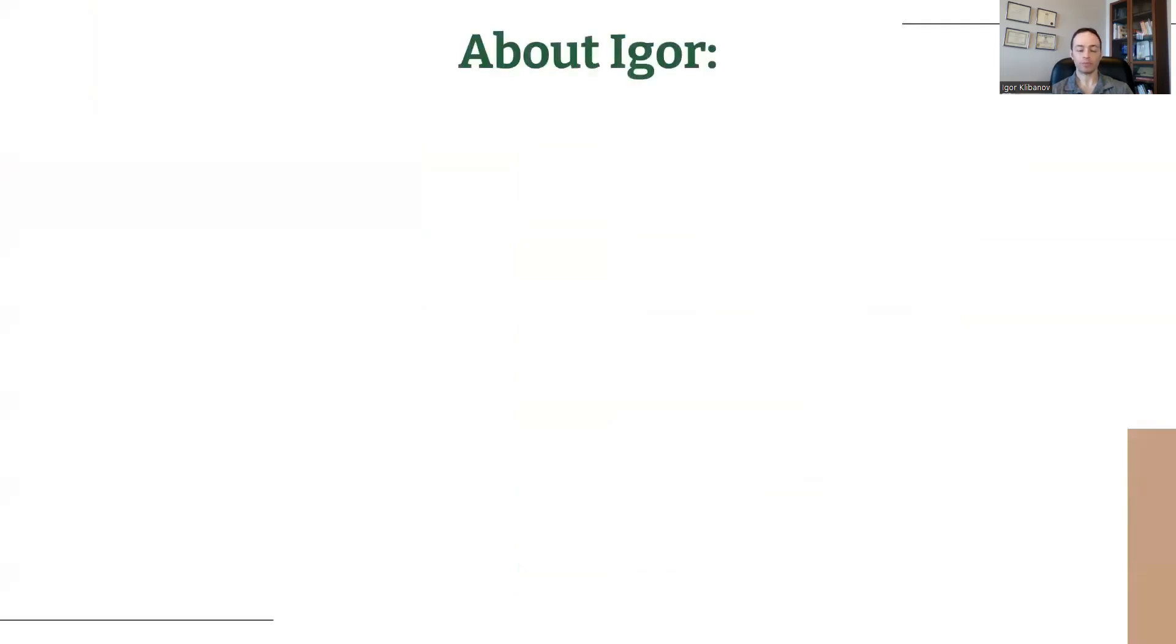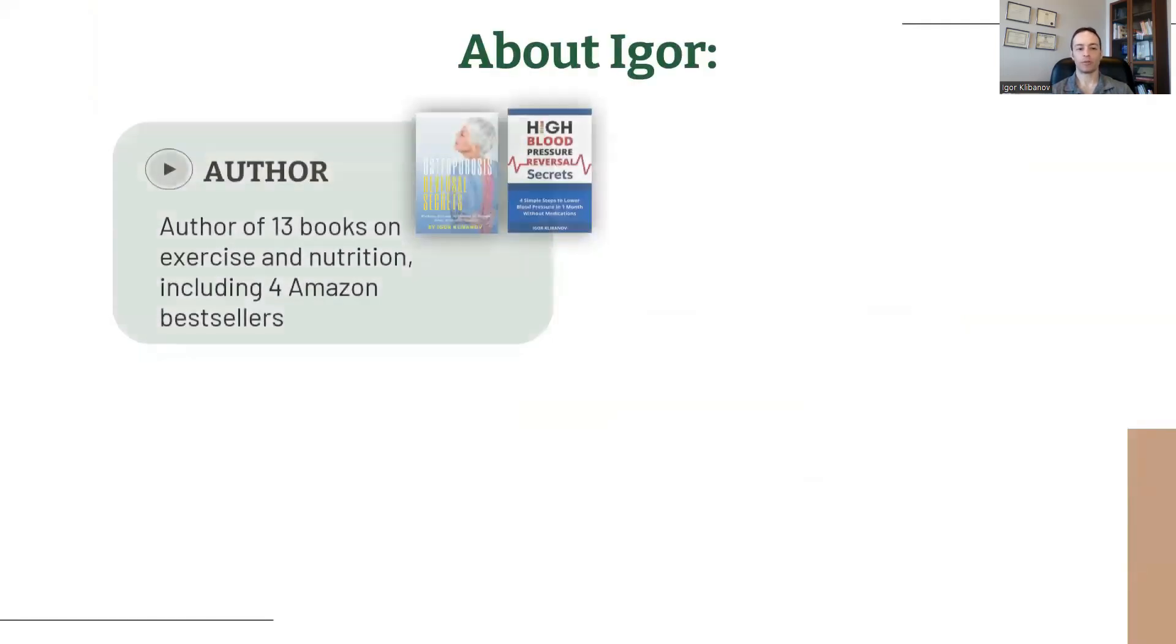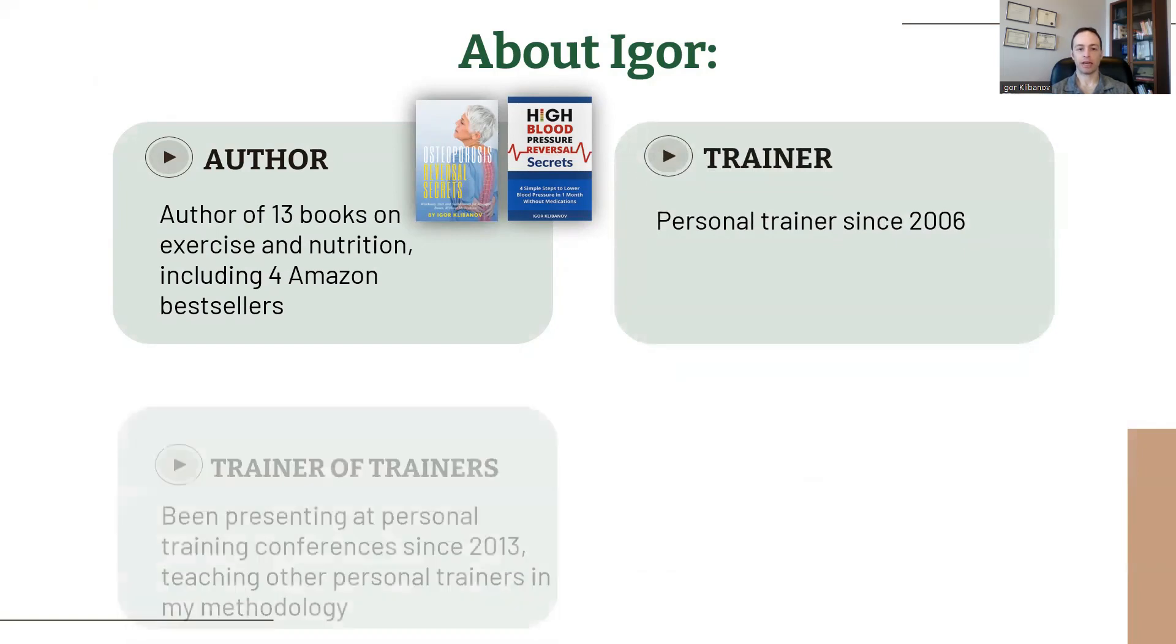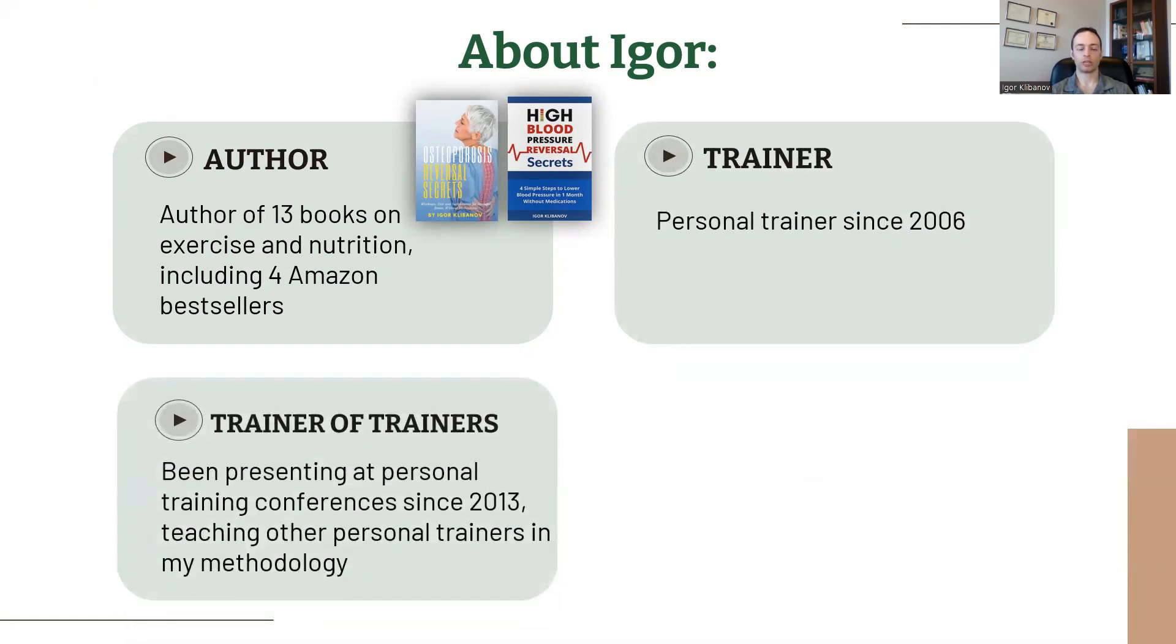Before we jump in, who am I? My name is Igor. I'm the author of 13 books on exercise and nutrition, including four Amazon bestsellers. As well, I've been a personal trainer since 2006, and I've been training other personal trainers in my methodology by speaking at some of the world's largest personal training conferences since 2013.